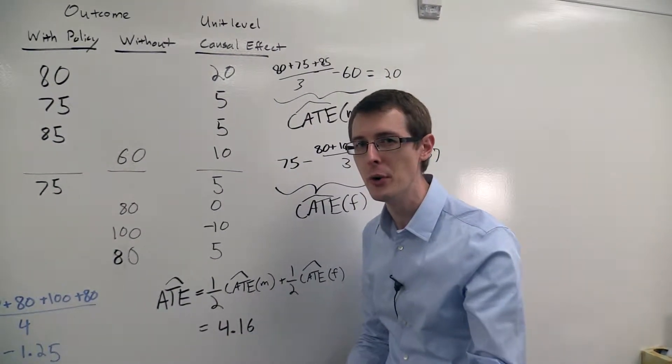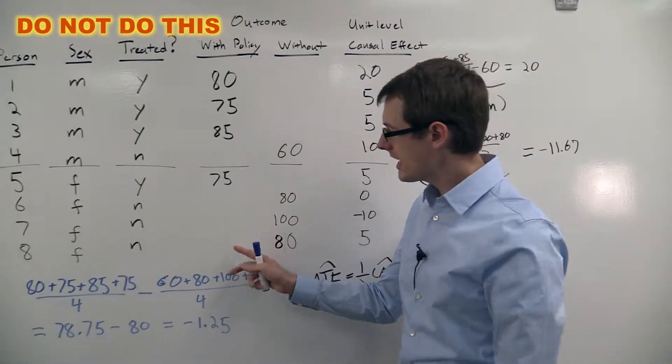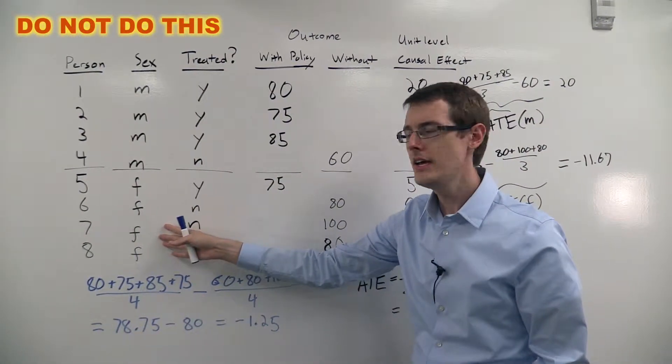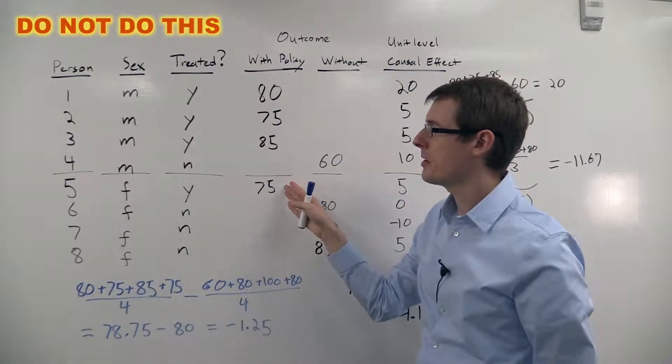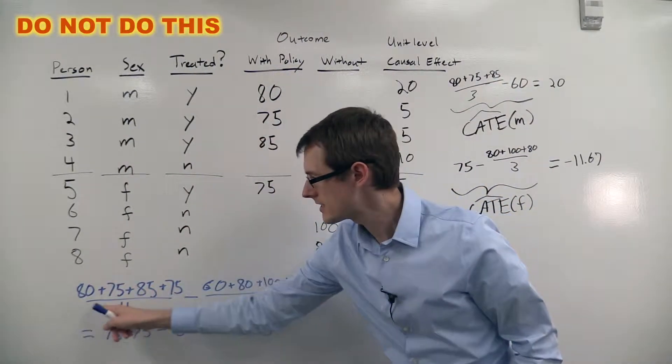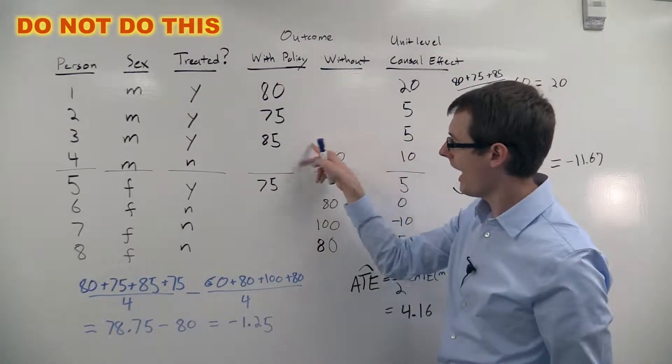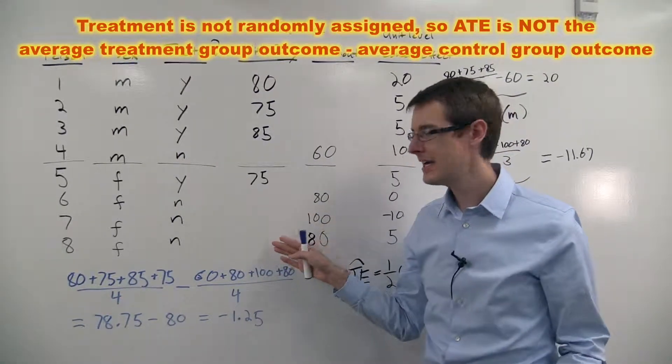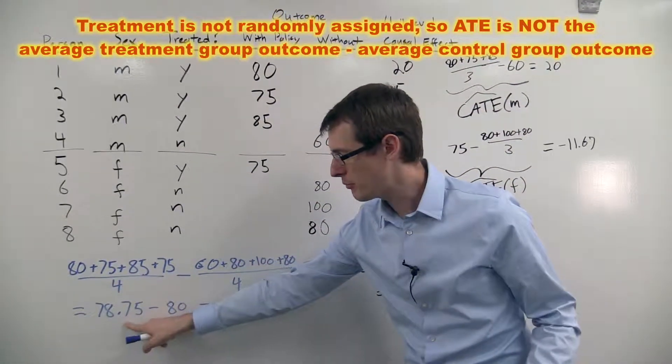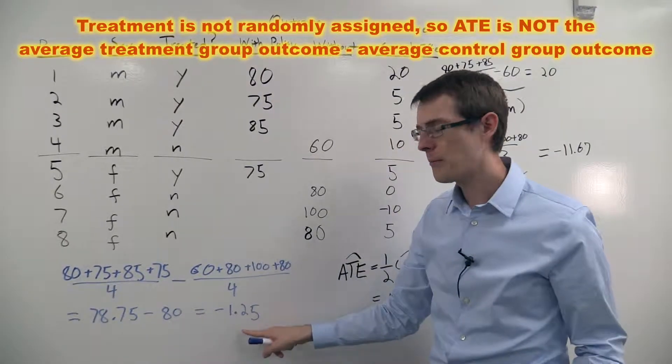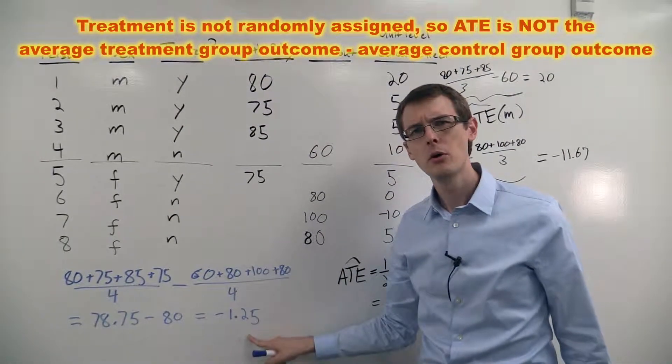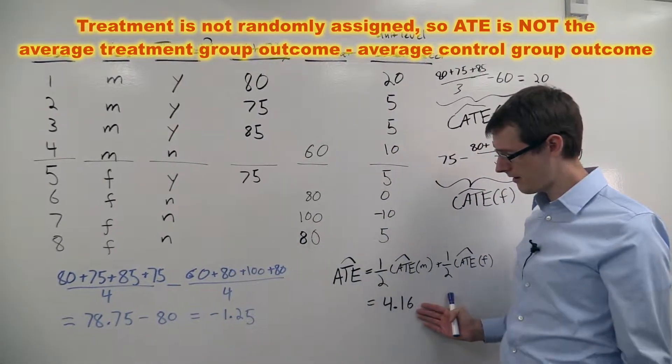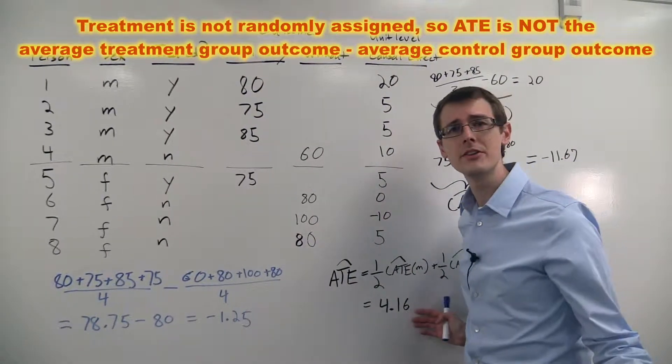Now here's what you definitely should not do instead. Instead, just ignore the fact that you have data on men and on women, and then just look at the average outcome among people who were treated, that's this number here, and subtract off the average outcome among people who weren't treated, that's this number here. In this case, you're going to get 78.75 minus 80, or minus 1.25, which would suggest that the average treatment effect is actually negative. The treatment's bad, whereas over here, we got a positive number, so the treatment's good.